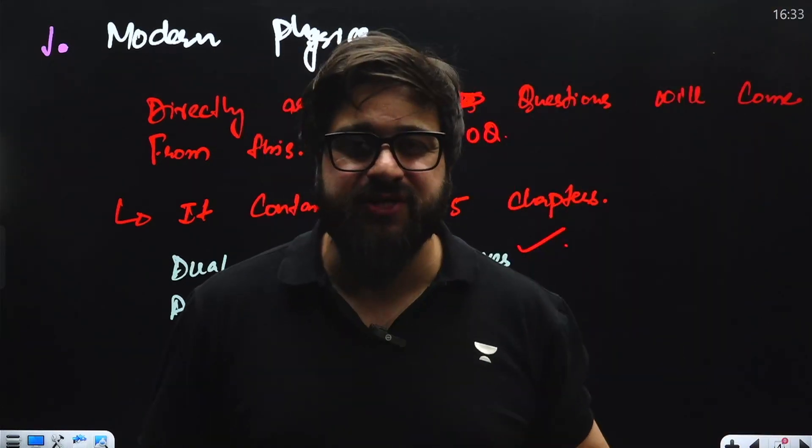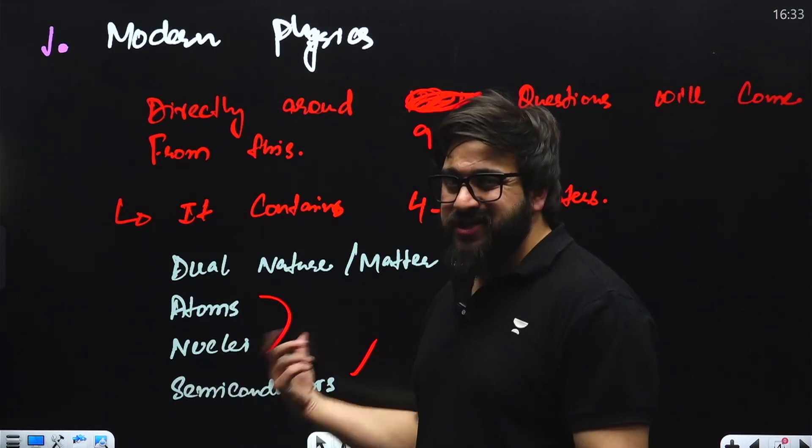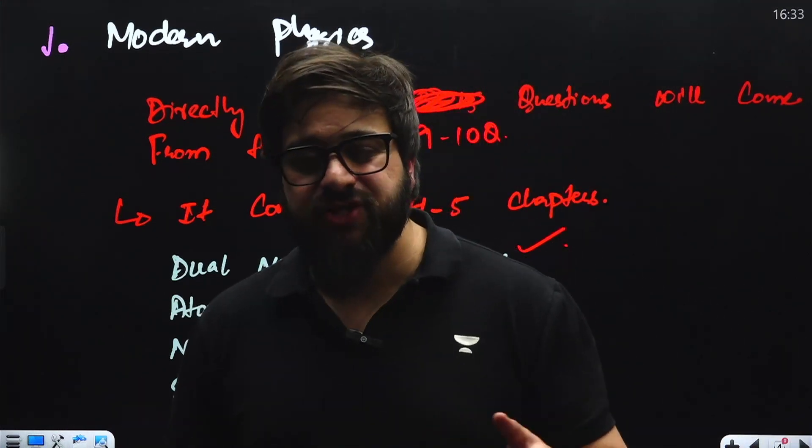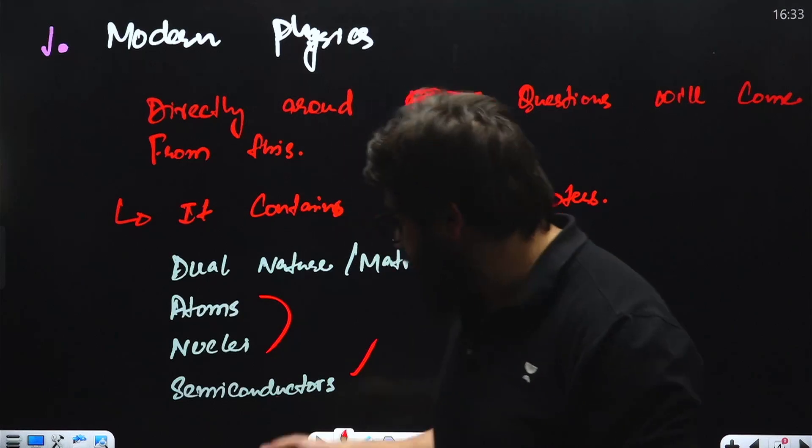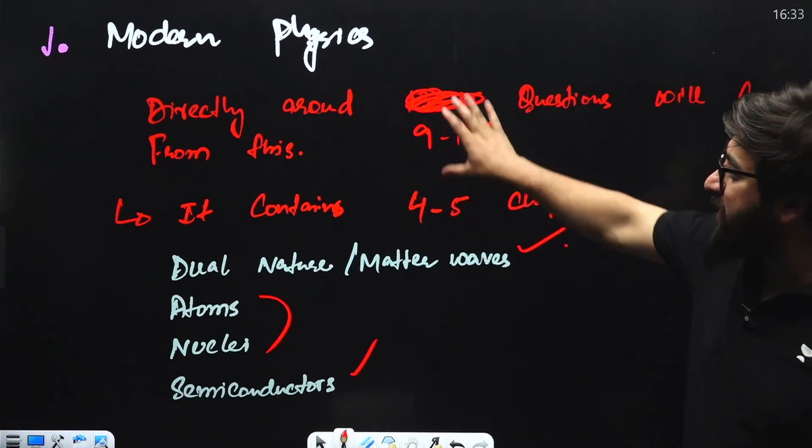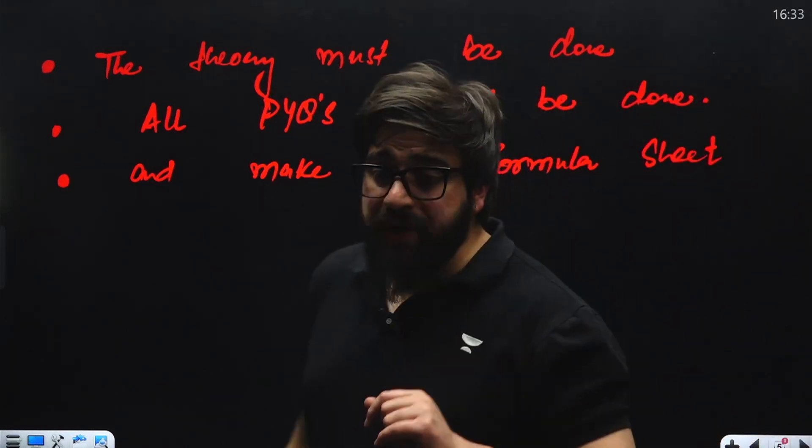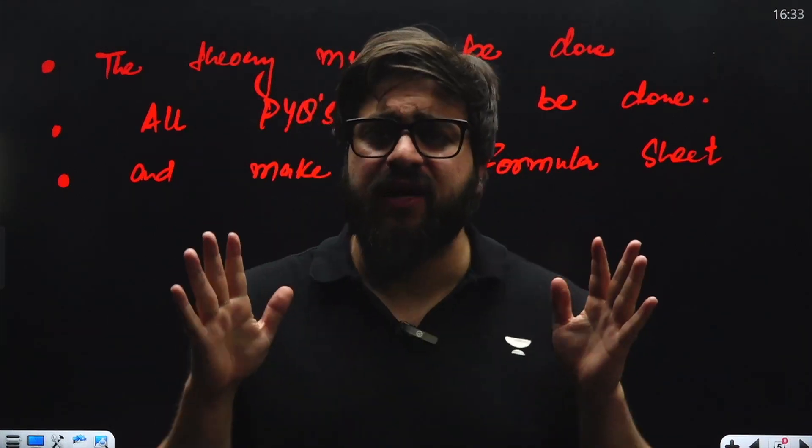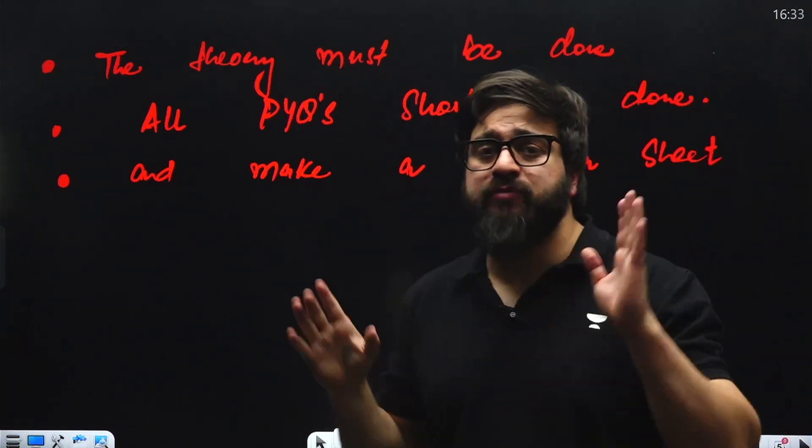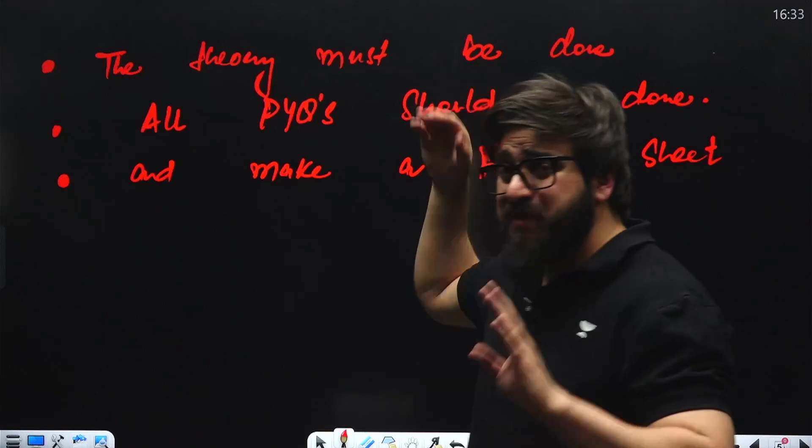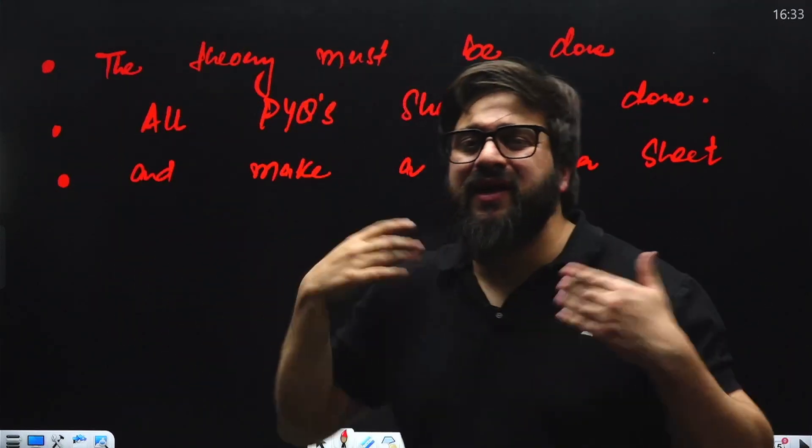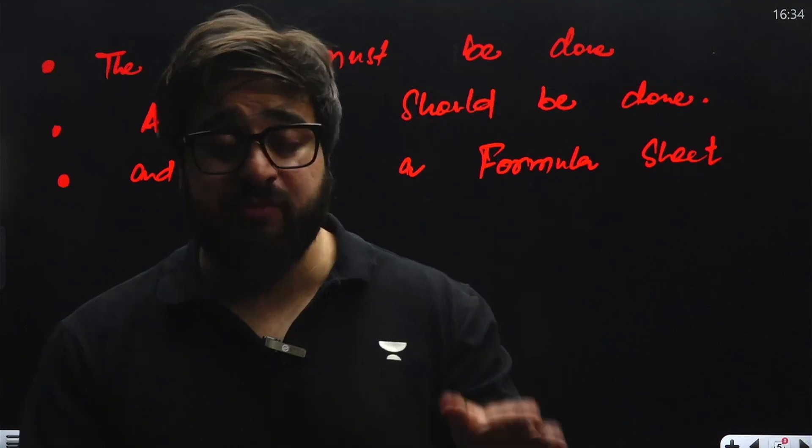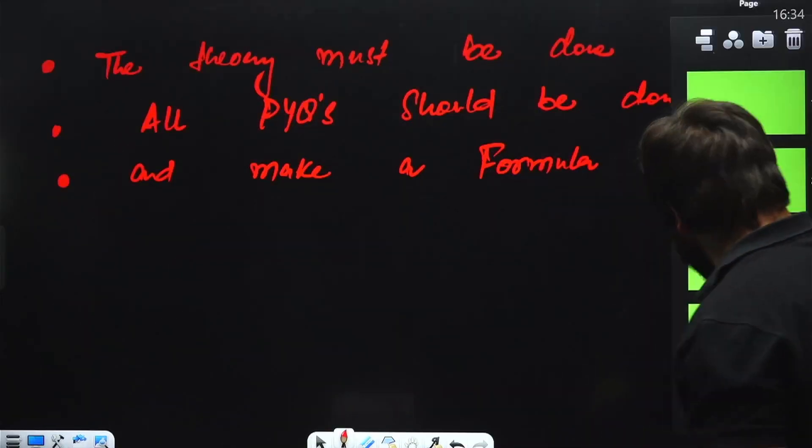Most of the questions come from its theoretical portion only. Assertion-reason may be there or statement-based questions, something like that. When it comes to atoms and nuclei, you have to study the binding energy and all, the Q value of the reaction is important. This is the portion which is known as Modern Physics. What you're supposed to do over here: the theory must be done, every single portion, every single concept. Previous year questions must be done from Modern Physics because these will keep on repeating. Many times we have seen questions repeating from Modern Physics. Make the formula sheet when it comes to Modern Physics, there are so many formulas. You have to make the formula sheet so that you remember every single formula.